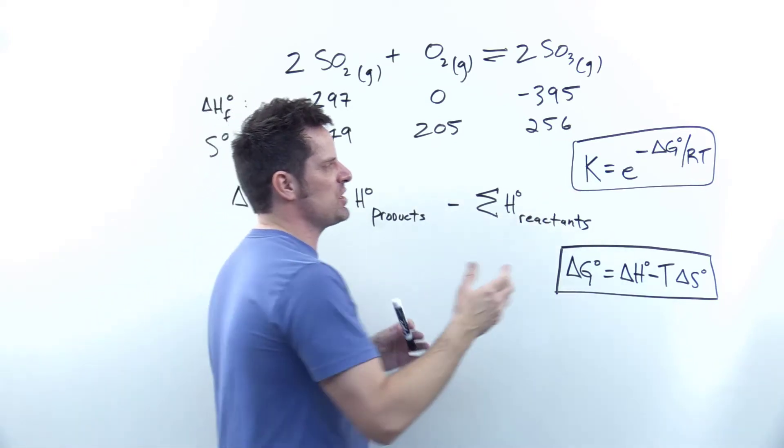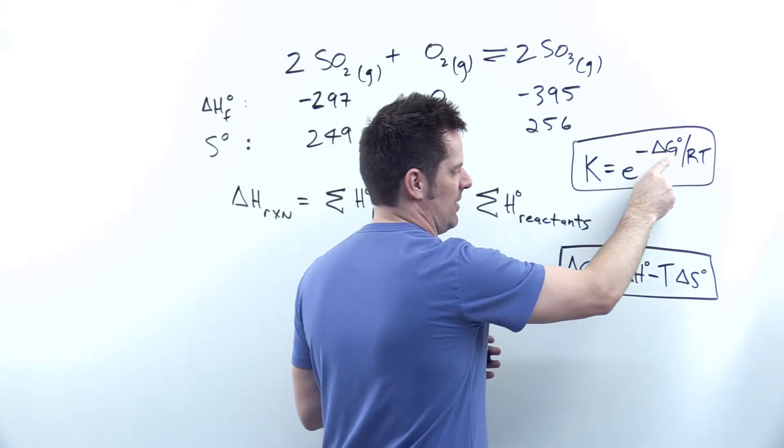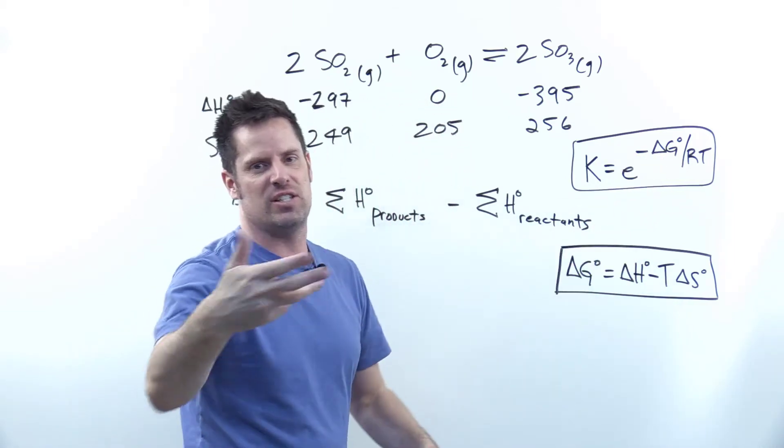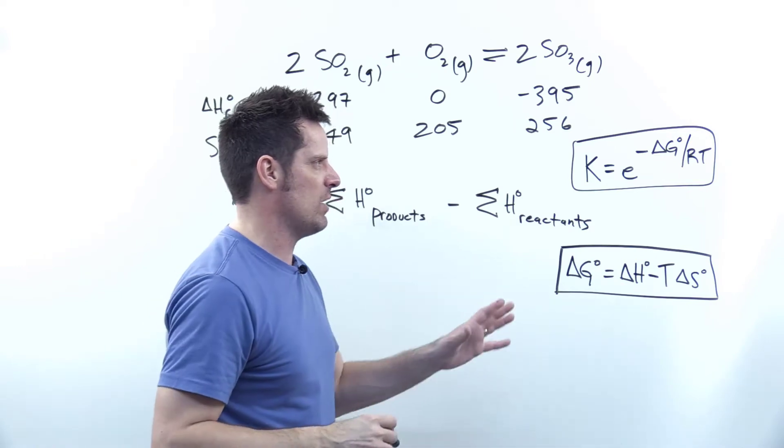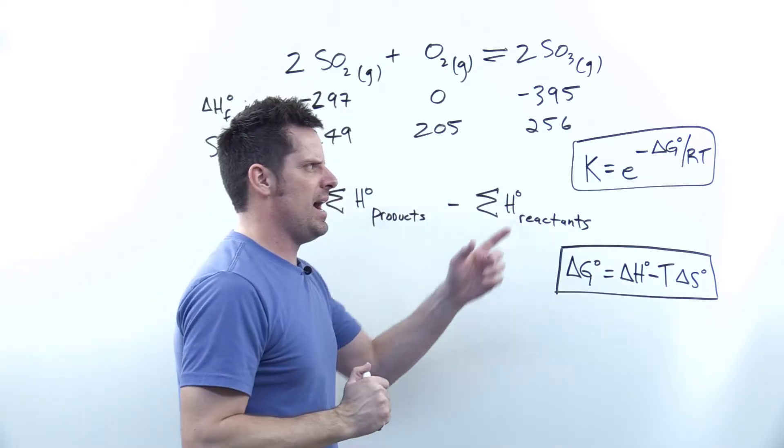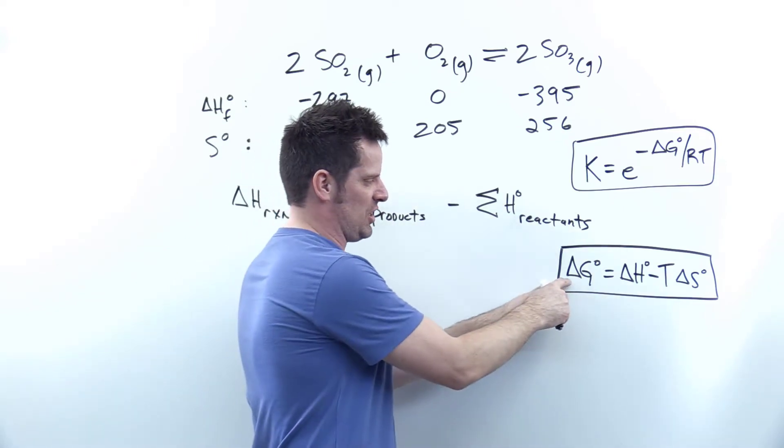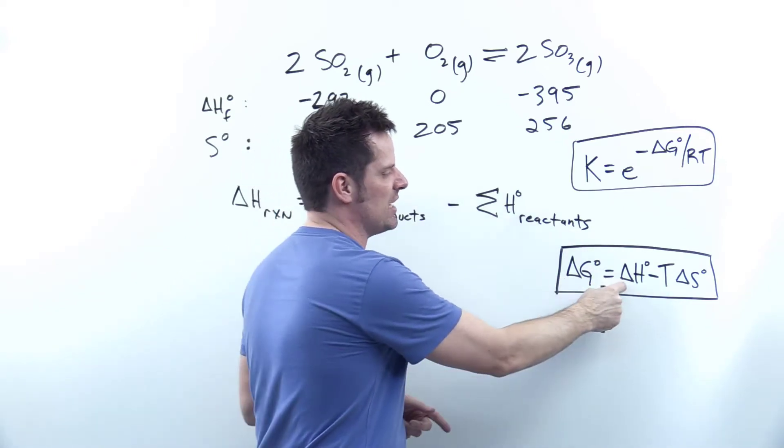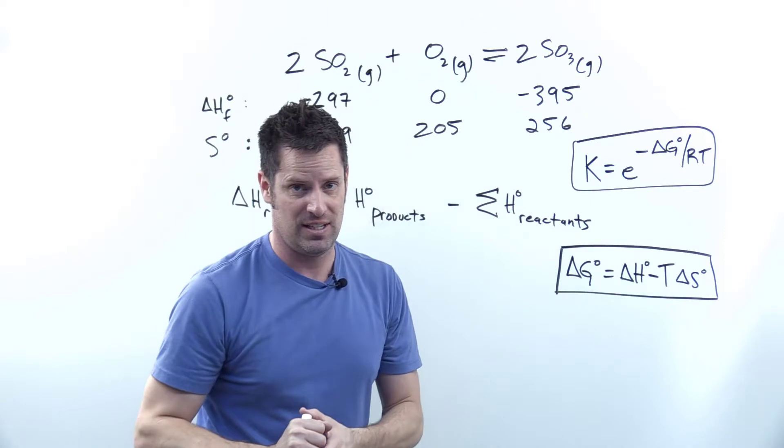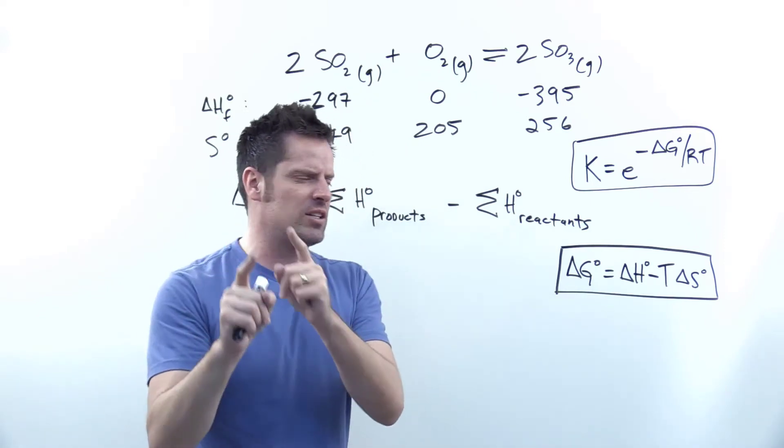In order to calculate K, I first have to figure out what delta G is, then insert R (the ideal gas constant) and the temperature (298K). To figure out delta G, I have to use this equation: delta G equals delta H minus T delta S.